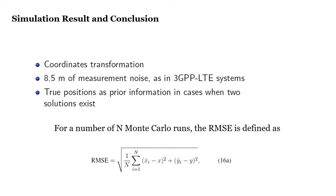To evaluate the performance of the TOF-TDOA estimator, we calculate the root mean square error (RMSE). For the measurement noise standard deviation, we assume a value of 8.5 meters, which coincides with the value used in 3GPP LTE systems. We consider the true positions as prior information in cases when two solutions exist. The prior information is used by the estimator to select the position solution that minimizes the L2 norm between the true position and that point, avoiding position ambiguity and evaluating only the stochastic contribution to position error. In a real scenario, however, the position prior shall be provided by a tracking filter.